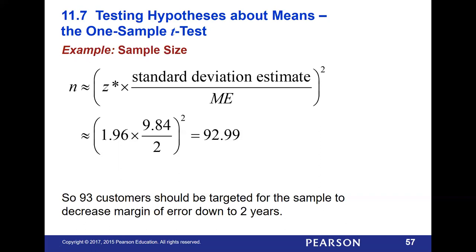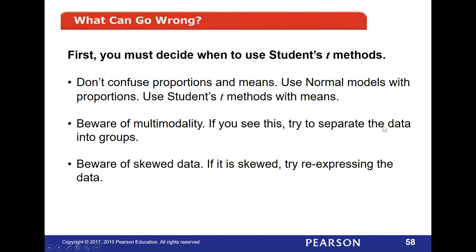That is the chapter. Don't confuse proportions and means — don't use proportion formulas with a mean or mean formulas with a proportion. Use normal models for proportions; use the T model with your means. Watch out if you have two modes in your data — try to break your data into two groups and run analyses on each separately. Watch out for skewed data — try re-expressing it maybe as a logarithm or some other transformation for a better distribution. Watch out for outliers and bias in your measurements. Make sure your data is independent, and that should get you where you need to go for these quantitative confidence intervals.